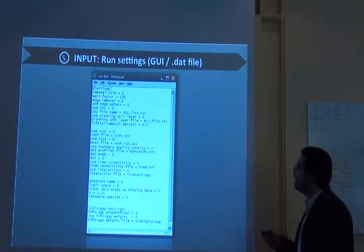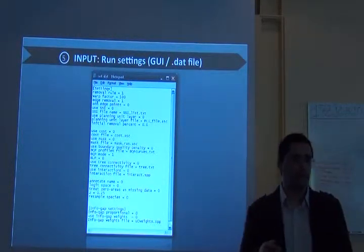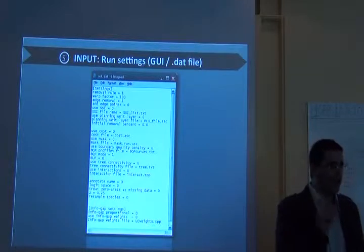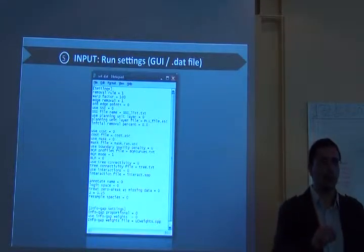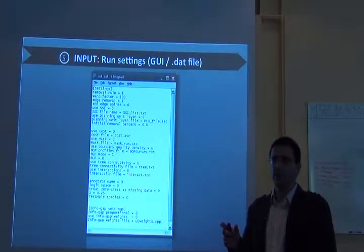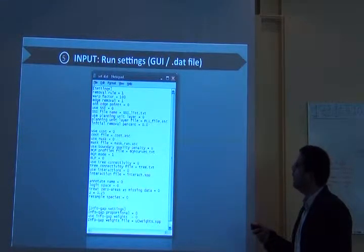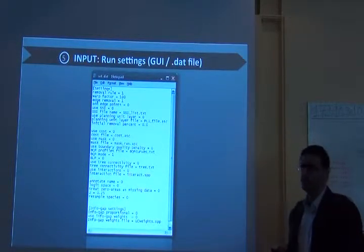You can remove it from edges. You can use this file for the species when you don't have the distribution actually. So you just have the point, the point locality data, the records with the coordinates.